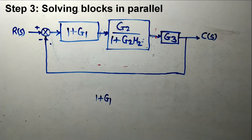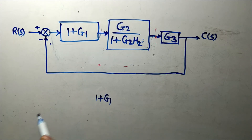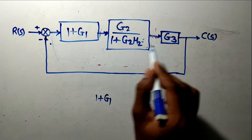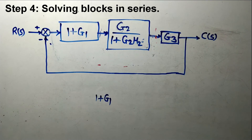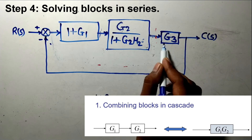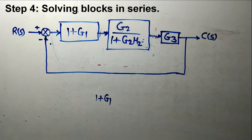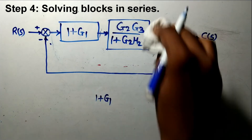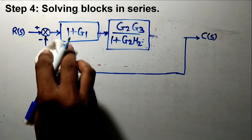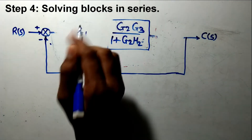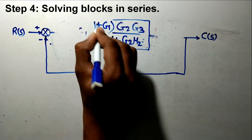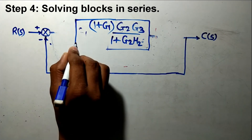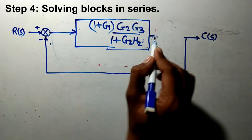Our next step — step number four — is to solve blocks in series. This block, this block, and this block are in series. If blocks are in series or cascade, there is multiplication of transfer functions. So these transfer functions will get multiplied. Therefore g3 will multiply here, g3 is eliminated as a separate block, and 1 plus g1 will also multiply into the numerator. So 1 plus g1 is in the numerator. I am keeping the calculation as is because in the next step I have to find the final transfer function.